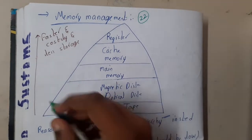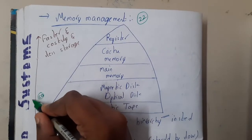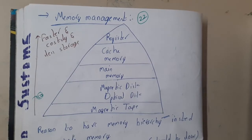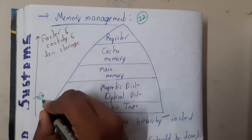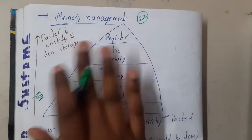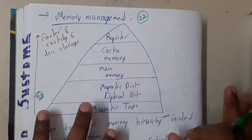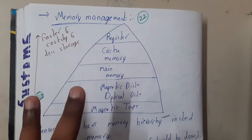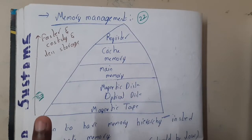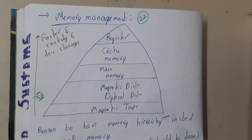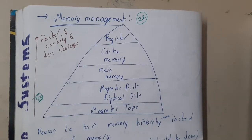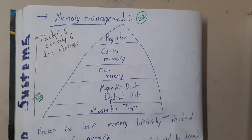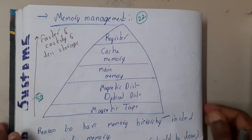Some memory management topics have already been covered in computer organization. I will try to cover all the topics again, but if you feel you are missing something, please check the computer organization videos. There are around three topics from this part which will be repeated — like page replacement algorithms, LRU, and the basic concept of memory hierarchy. In computer organization, you will find this same concept under the name memory organization or memory hierarchy.